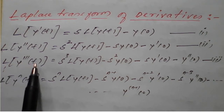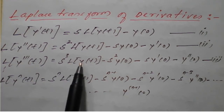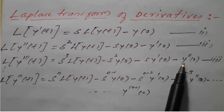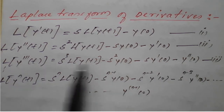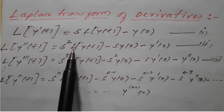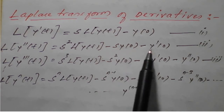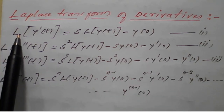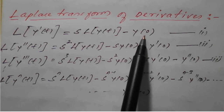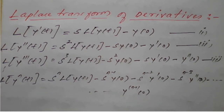L of y triple dash of t is S cubed times L of y of t minus S squared Y of 0 minus S times Y dash of 0 minus Y double dash of 0. L of y double dash of t is S squared times L of y of t minus S times Y of 0 minus Y dash of 0. L of y dash of t is S times L of y of t minus Y of 0. We will apply all three expressions to our given problem.